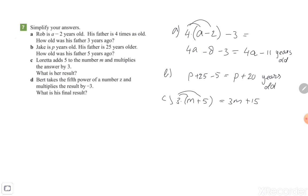The last one, exercise d. Bert takes a fifth power of a number z. So we have the number z and we're going to take the fifth power, so z to the power of 5. And multiply that result by minus 3, so you can do it inside the brackets times minus 3.